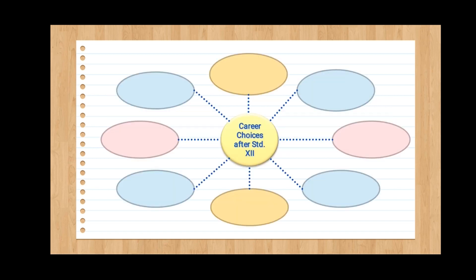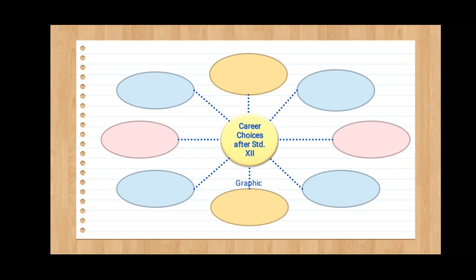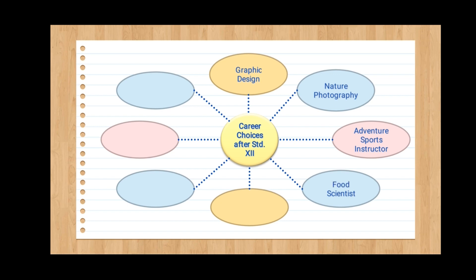I have taken one diagram here in the form of balloons or circles — Career Choices After Standard 12th. The branches include: graphic design, nature photography, adventure sports instructor, food scientist, fitness management, ethical hacking, creator/artist, and travel writing.